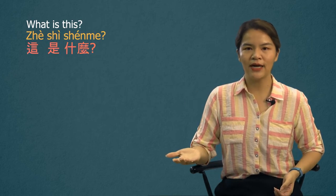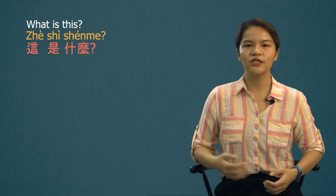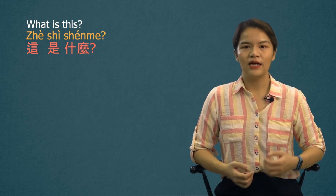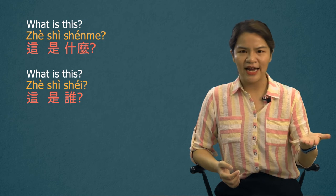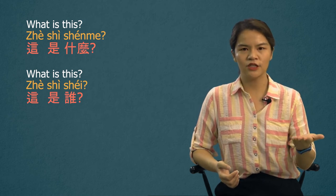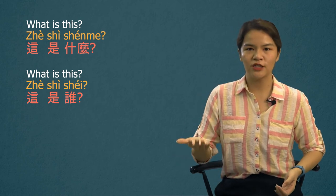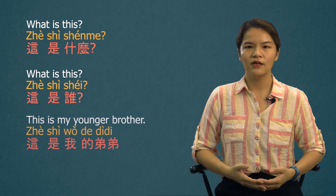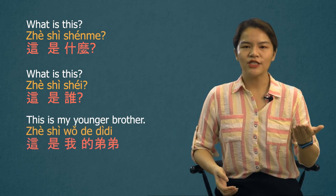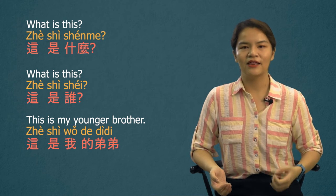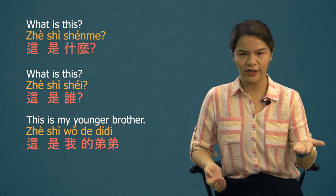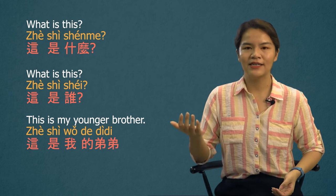So how do you say 'what is this?' — 这是什么? And 'who is this?' — 这是谁? For example: 这是我的弟弟 — This is my younger brother.